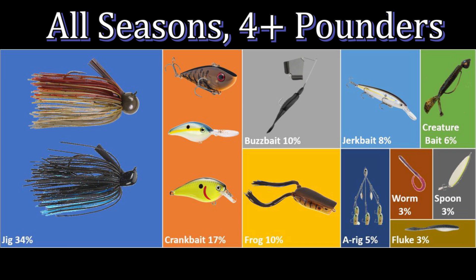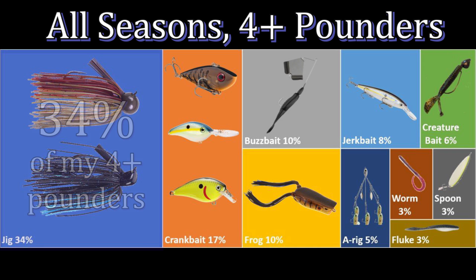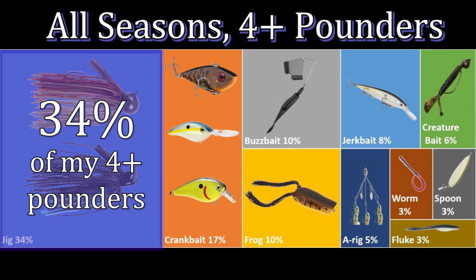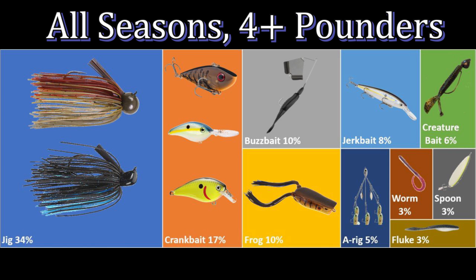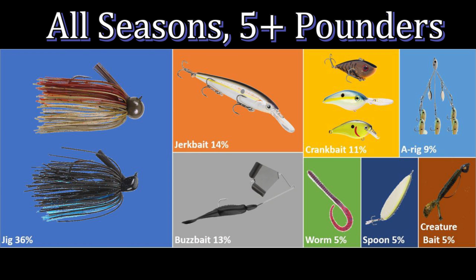Next I cut the data for only bass over four pounds. This graph shows the percentage of four-pound-plus bass caught on each bait: 34% came on a jig, 17% on a crankbait, 10% on a buzzbait, 10% on a frog, and everything else goes down from there. The jig is my best bait for catching four-plus-pound bass, and notably 20% of my four-plus-pounders come on topwater lures.